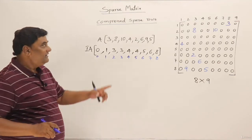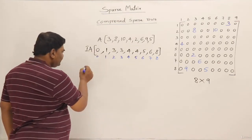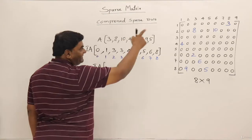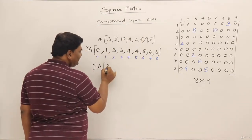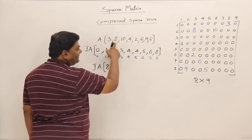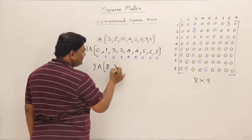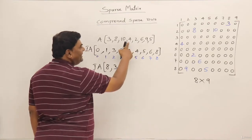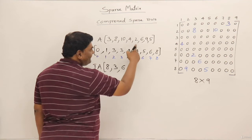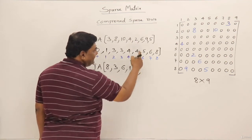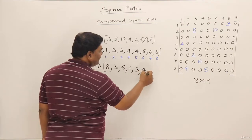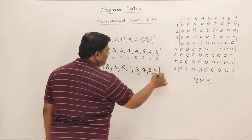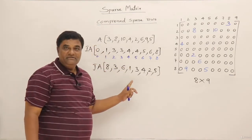The third array is the column array, also called JA, for column values. For each nonzero element we store its column number. Element 3 is in column 8, element 8 is in column 3, element 10 is in column 6, element 4 is in column 1, element 2 is in column 3, element 6 is in column 4, element 9 is in column 2, and element 5 is in column 5. So the column array has as many entries as there are nonzero elements.